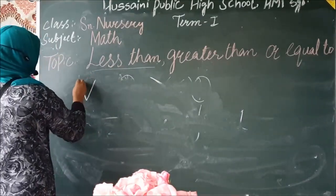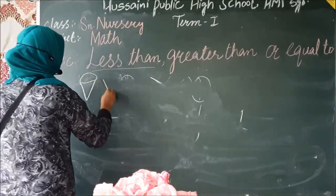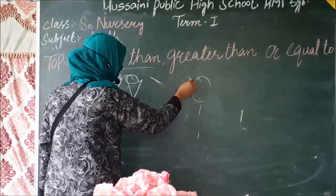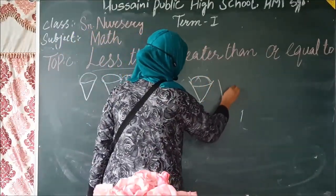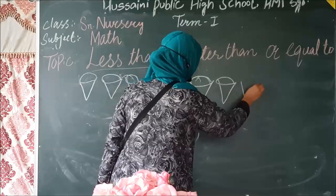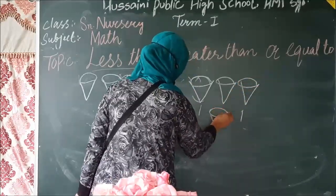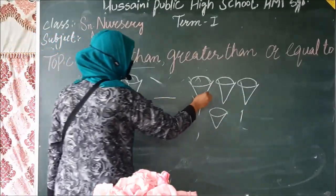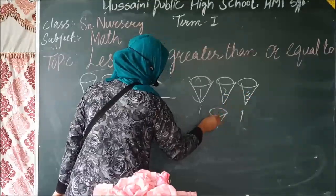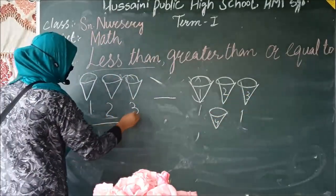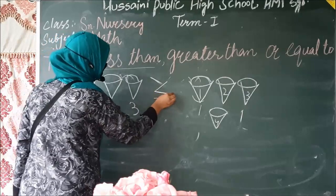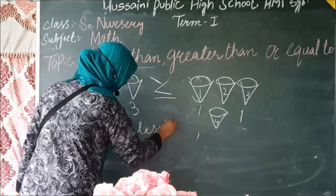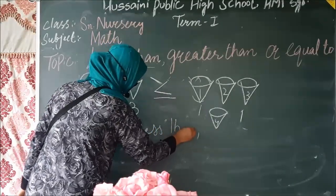हमारे पास कुछ ice creams हैं। यहाँ से हम three ice creams लेंगे, दूसरे साइड से four ice creams लेंगे — one, two, three और one, two, three, four। तो ये three है, ये four से कम है — less than। तो हम less than की sign लगाएंगे: three is less than four।